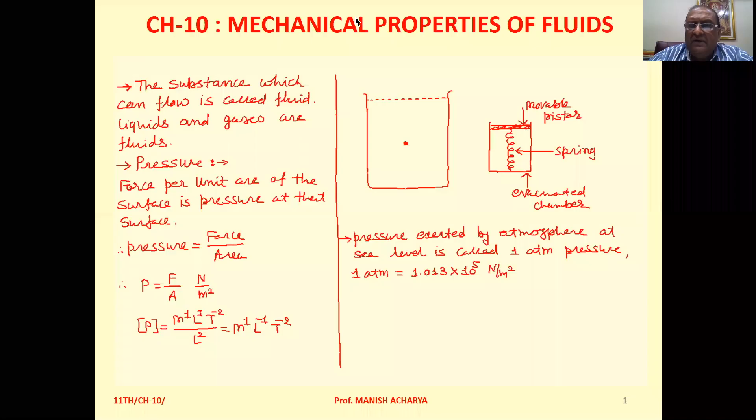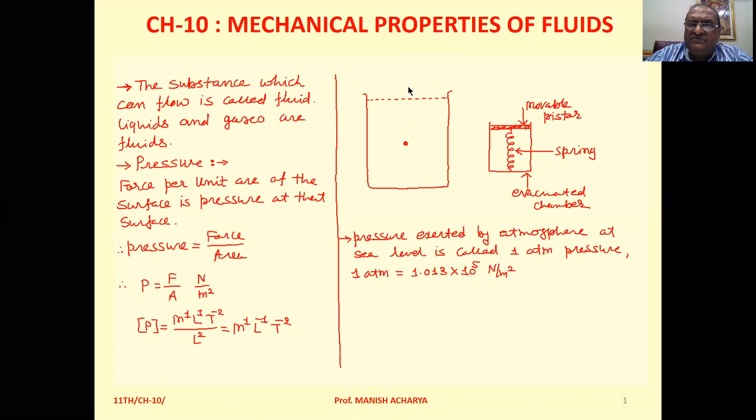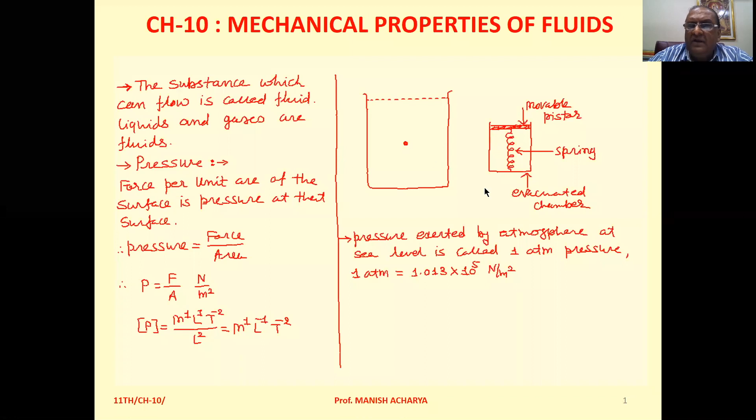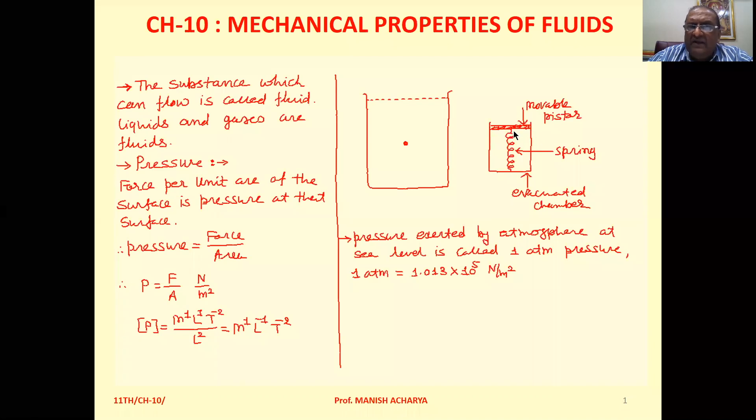With the help of this simple device, one can measure the pressure of the liquid at any point. Suppose this is the container in which the liquid is filled and we want to find the pressure at this particular point. In this device shown in the figure, this is the evacuated chamber and this is the movable piston.